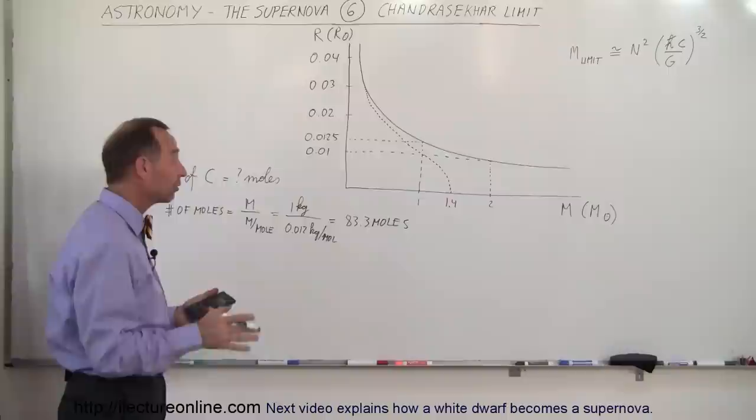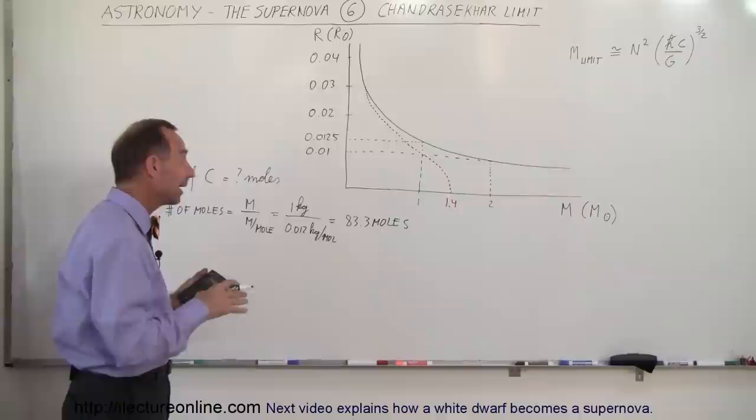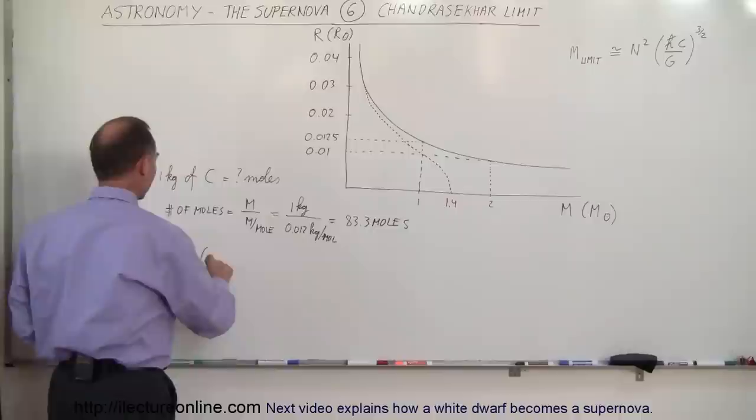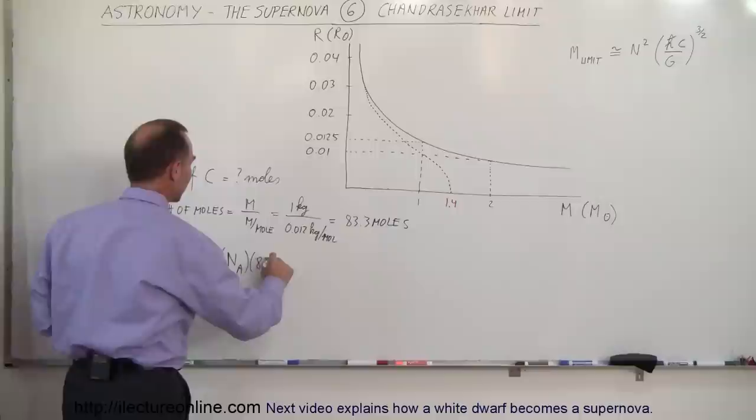Now if we multiply that times Avogadro's number, that would be the number of molecules. And of course for each molecule there would be 6 electrons, because there's 6 electrons per molecule of carbon, so N would then equal 6 times Avogadro's number times the number of moles per kilogram, 83.3 moles.